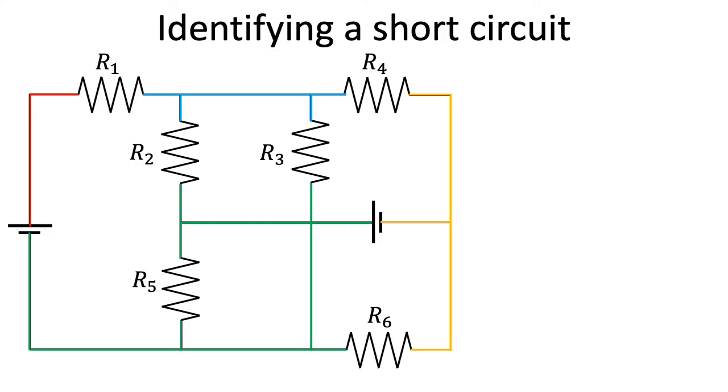Here is why this method works. As I explained earlier, each color represents one voltage value. So if a resistor has the same color at both terminals, then there is no voltage difference across it. In this particular example, R5 has green at both terminals, so the voltage difference across R5 is zero.